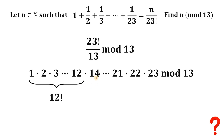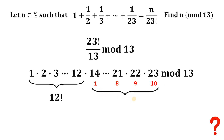14 divided by 13 has remainder 1, so 14 ≡ 1 mod 13. 15 ≡ 2 mod 13, and so on. 21 divided by 13 has remainder 8, so 21 ≡ 8 mod 13. 22 ≡ 9 mod 13, and 23 ≡ 10 mod 13. Together, those numbers form 10 factorial.